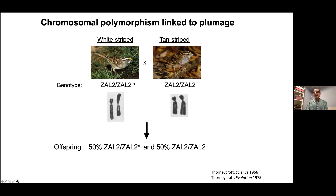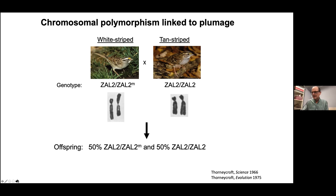This explained the maintenance of the 50/50 frequency of the two colors. When white and tan birds mate, you'd expect from this genotype that 50% of the birds will have two normal chromosomes — the ZAL twos — and will be tan, and 50% will be white because they carry one of these inverted chromosomes.